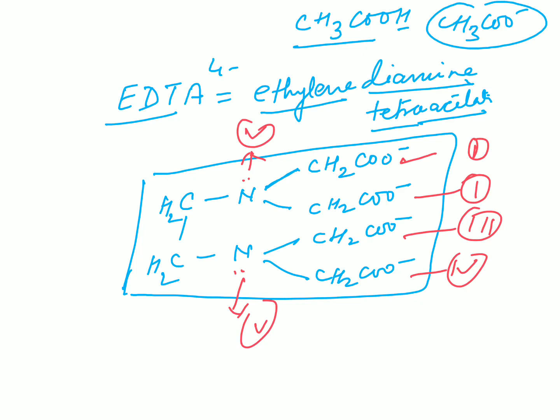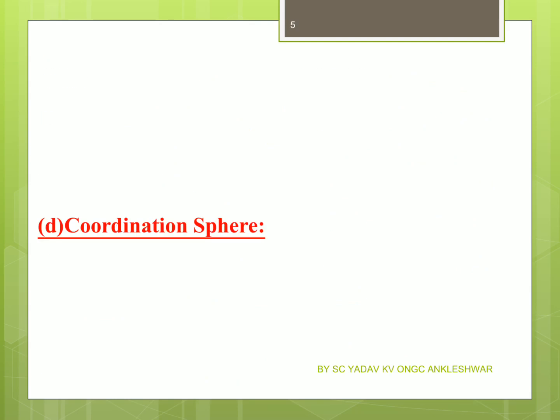EDTA is hexadentate — it has 6 donor atoms. Similarly, ethylene diamine: construct ethylene as CH2−CH2, and since it is diamine, attach N (NH2) on each side. These two nitrogen atoms can donate lone pairs — this is ethylene diamine. The oxalato group comes from oxalic acid. These are the ligands.